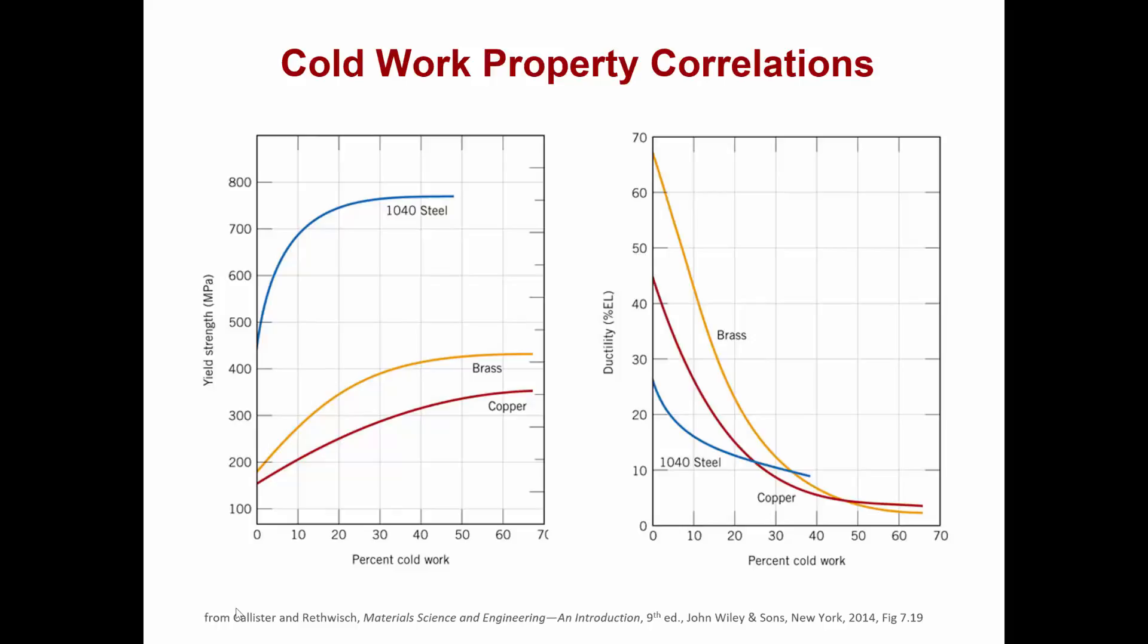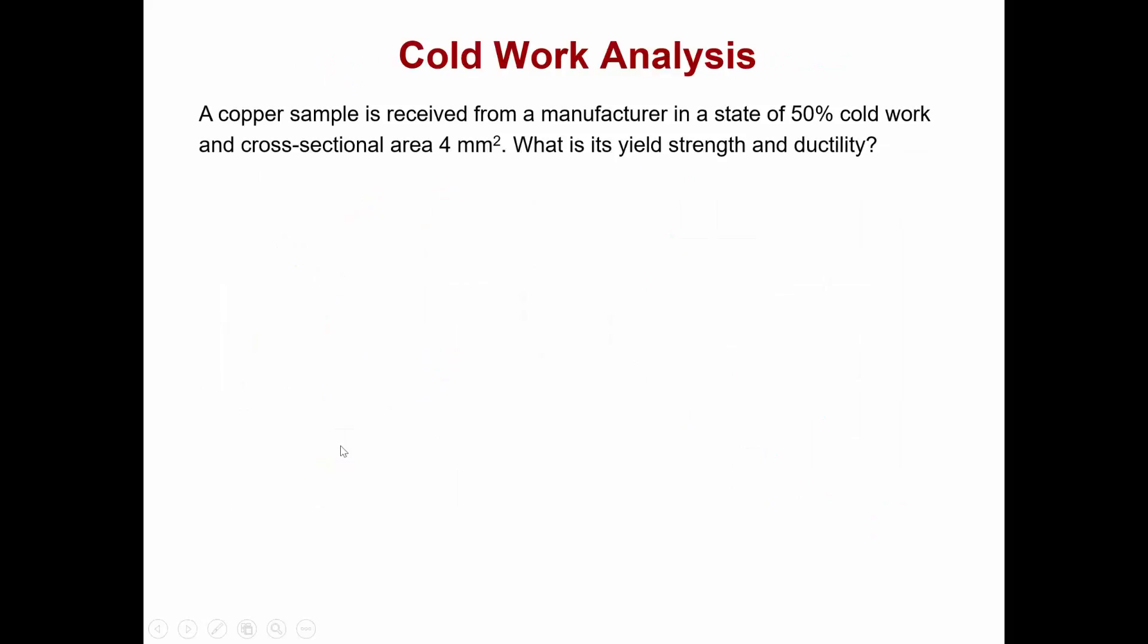In terms of how we might use graphs like this to perform a percent cold work analysis, let's consider that we receive a copper sample from a manufacturer in a state of 50 percent cold work and a cross-sectional area of 4 square millimeters. Let's suppose that we're interested in knowing what its approximate yield strength and ductility is at this point.